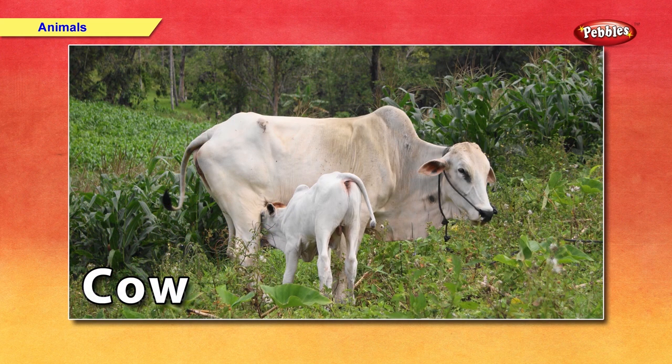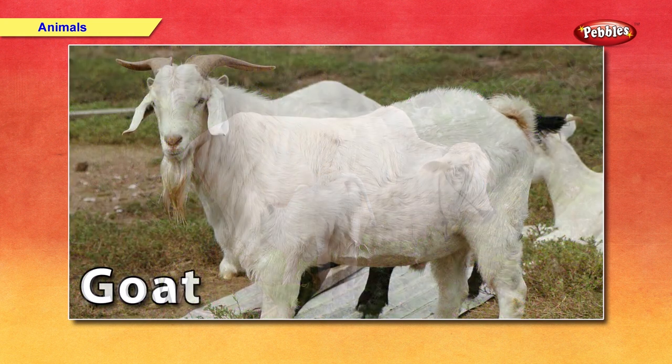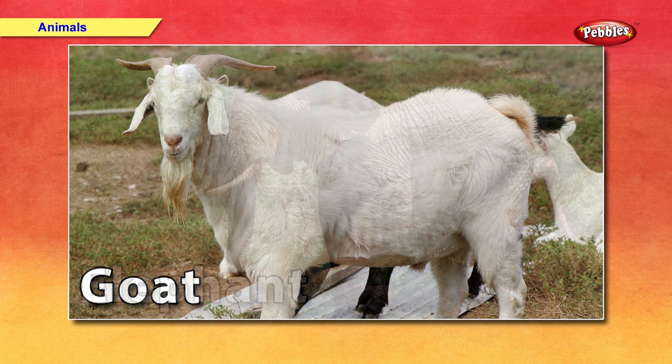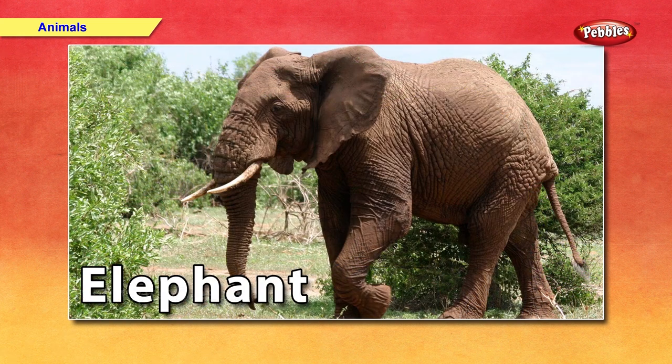Cow — cow gives us milk. All children should drink milk every day. Goat — we get milk and meat from the goat. Elephant — an elephant is the largest living animal on land. It has a long trunk. A male elephant has two long teeth. An elephant eats grass and leaves.